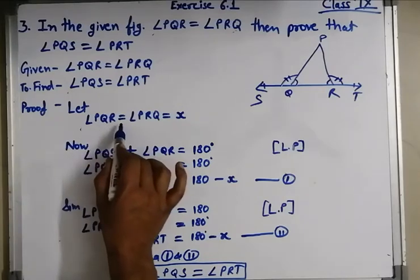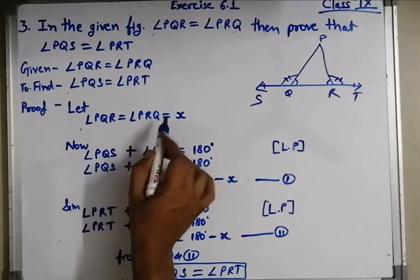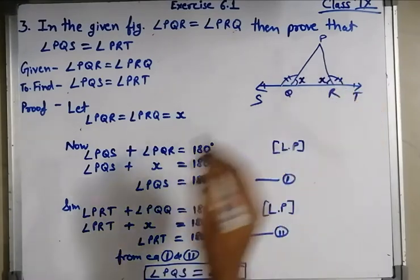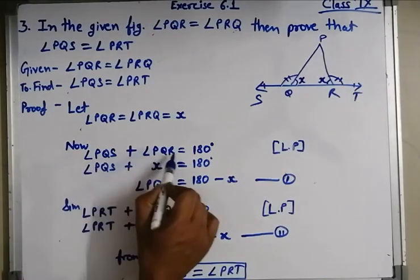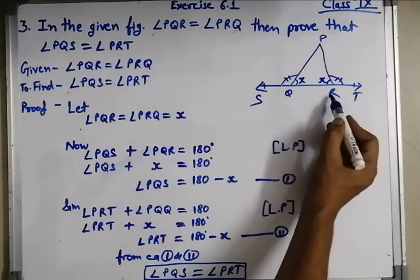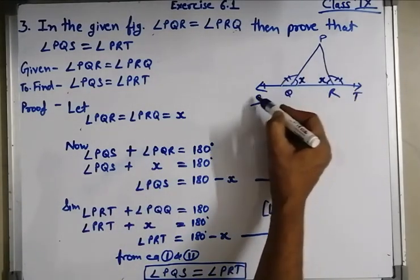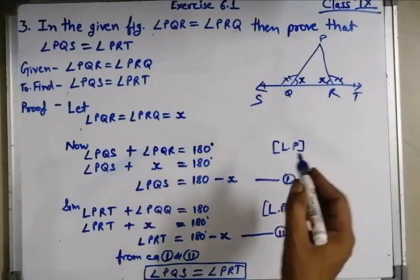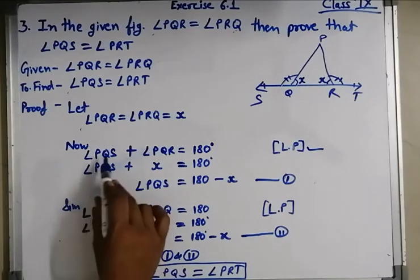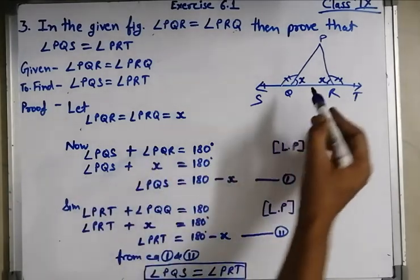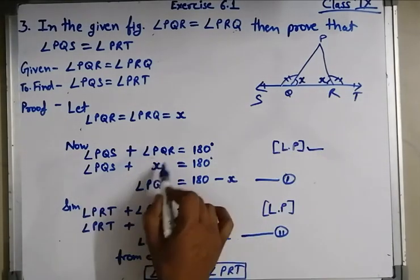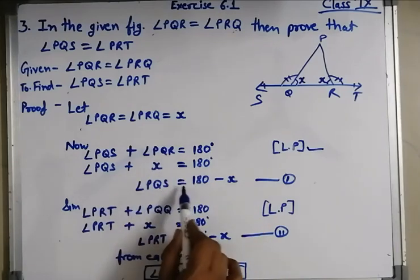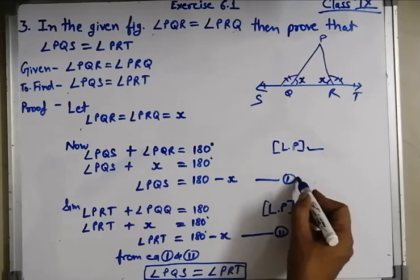Proof. Let angle PQR is equal to angle PRQ is equal to x. Now, angle PQS plus angle PQR is equal to 180 — we are using linear pair. PQS as it is, angle PQR we are assuming x. Putting in: PQS plus x is equal to 180. So angle PQS is equal to 180 minus x. This is equation number 1.